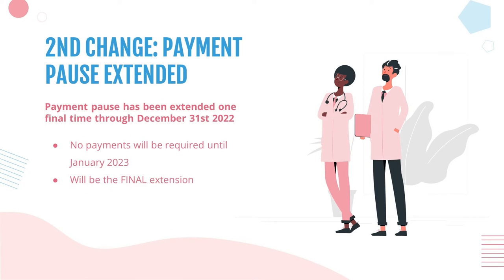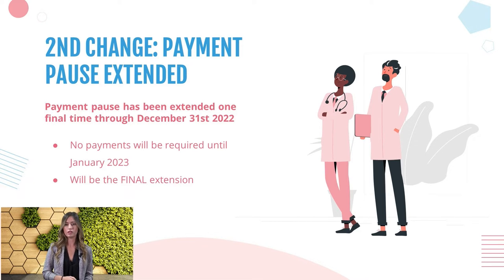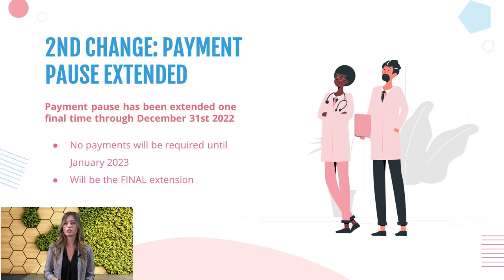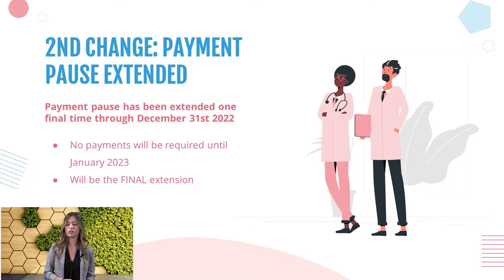The second change is the payment pause extension. If you've had federal student loans, you know that repayments have been paused since March 2020 due to COVID. It's been extended several times, and was supposed to resume September 1st of 2022. They have extended it one final time through December 31st, and we can expect repayment to resume beginning of January 2023. No payments will be required during this time, and loan servicers will provide more details on exact due dates.